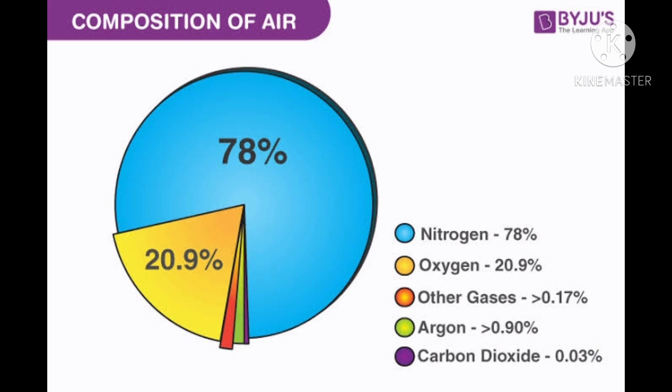Next is oxygen, the life-giving gas. Its percentage in air is 21%. While animals breathe in oxygen and breathe out carbon dioxide, plants take in carbon dioxide during photosynthesis and release oxygen.